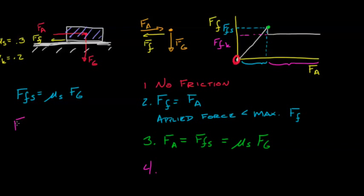And the force of friction kinetic is simply the coefficient of kinetic friction times the force of gravity. So in this case, the force of friction is equal to the kinetic coefficient times the force of gravity. And the force applied is whatever the force is beyond the force of friction.